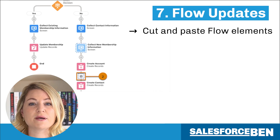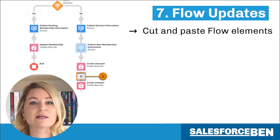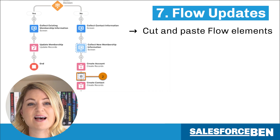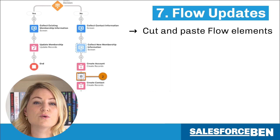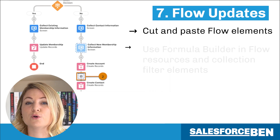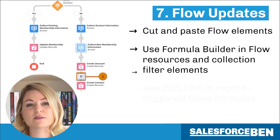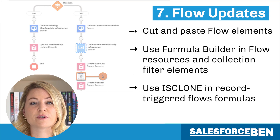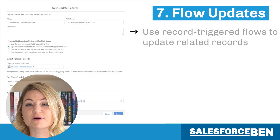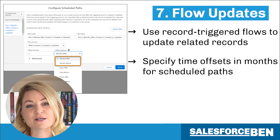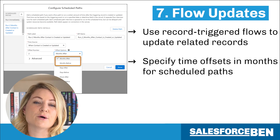There's no need to delete the element that you've copied or change the API name of the new pasted element. To cut an element, click on it and select cut element. To paste the element, simply hover over where you want to paste it and then click the clipboard. Alongside this, you can now also use Formula Builder in Flow Resources and Collection Filter Elements, use IsClone in Record Triggered Flow Formulas, use Record Triggered Flows to update related records, and specify time offsets in months for scheduled paths, and so much more.